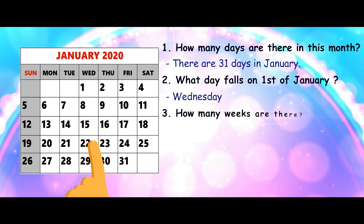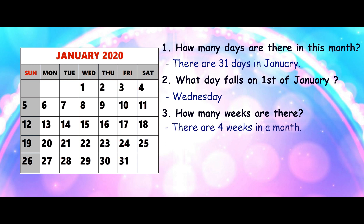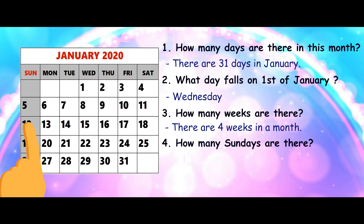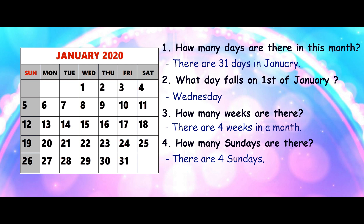Now, how many weeks are there? There are 4 weeks in every month. Remember that there are 4 weeks in a month. Now let's see how many Sundays there are. Let's count: 1, 2, 3, 4. So there are 4 Sundays.